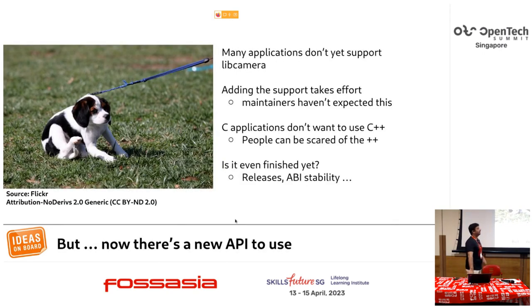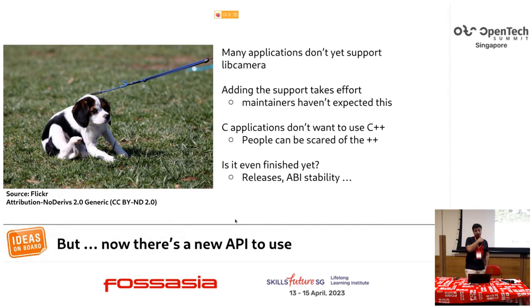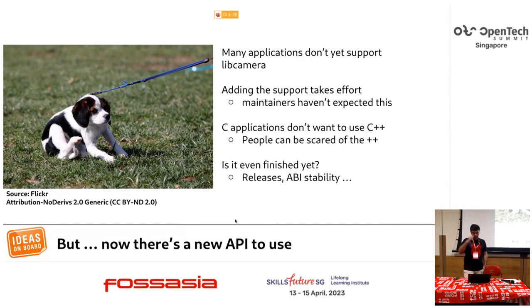libcamera aims to solve it. There are some complications: C applications don't want to use C++, and libcamera is written in C++, but we are working on language bindings as well. Is it finished? Not yet, but we do have releases. We are not guaranteeing ABI stability yet. After the challenges and complications libcamera tries to address, here are some features and developments. libcamera has a GStreamer element, meaning you can use the GStreamer element to encode, stream, and mix with other GStreamer elements to build a pipeline as you wish.